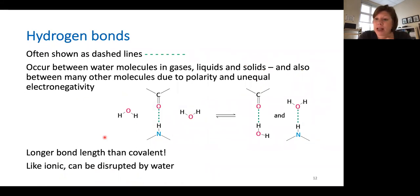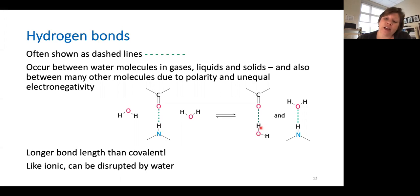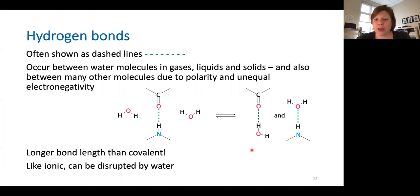Let's talk for a moment about hydrogen bonds. They're often shown as dashed lines, and they can occur between water molecules anywhere, but also many other molecules that have polarity due to unequal electronegativity. Hydrogen bonds are going to form between an oxygen and a hydrogen, and that hydrogen needs to be attached to another electronegative element like nitrogen. We could draw this the other way: over here we've got oxygen attached to hydrogen, and that hydrogen is hydrogen bonding to an oxygen. So we're going to have one hydrogen and two electronegative atoms in this equation — and those electronegative atoms can be oxygens or nitrogens, which is what we see most commonly in biochemistry.